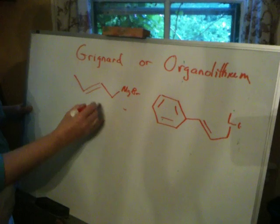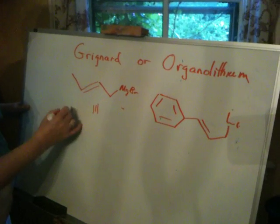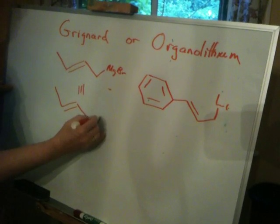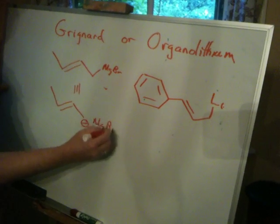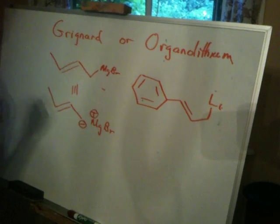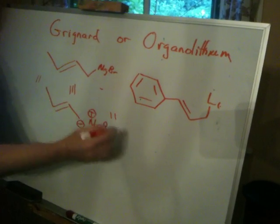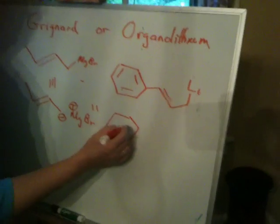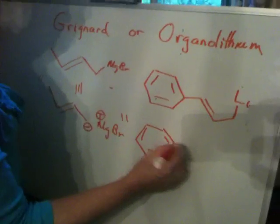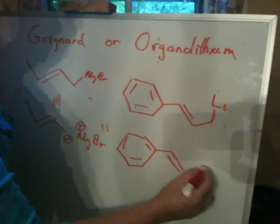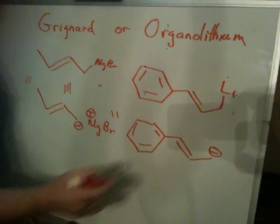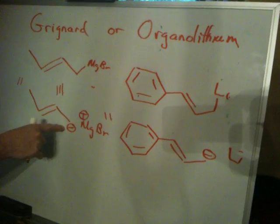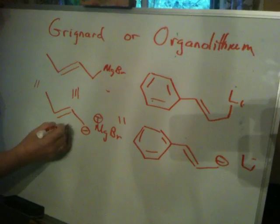So these behave like anions. This is really just like this — not exactly like that, but it behaves like that. So I'll put it in quotes: this behaves like this. Now, that being the case, this is allylic. And being allylic, there's another resonance form.